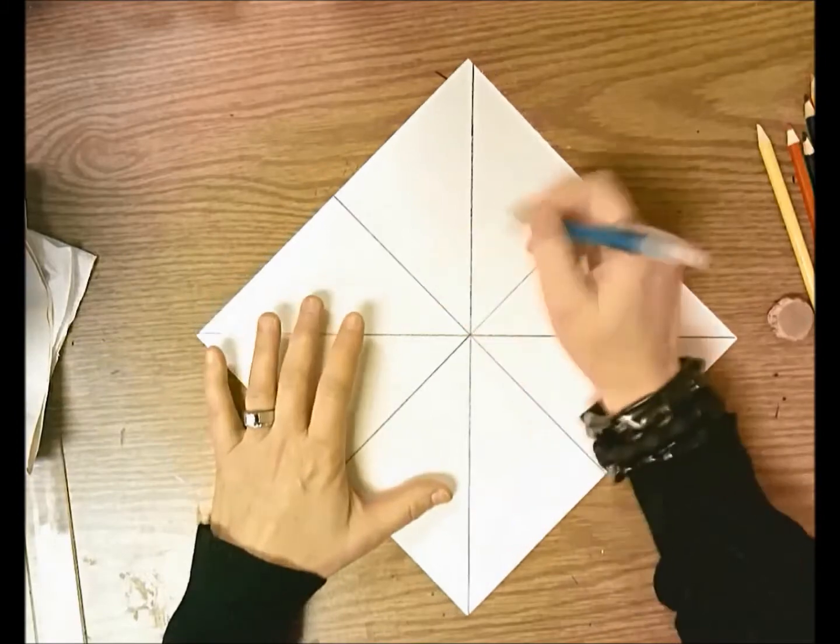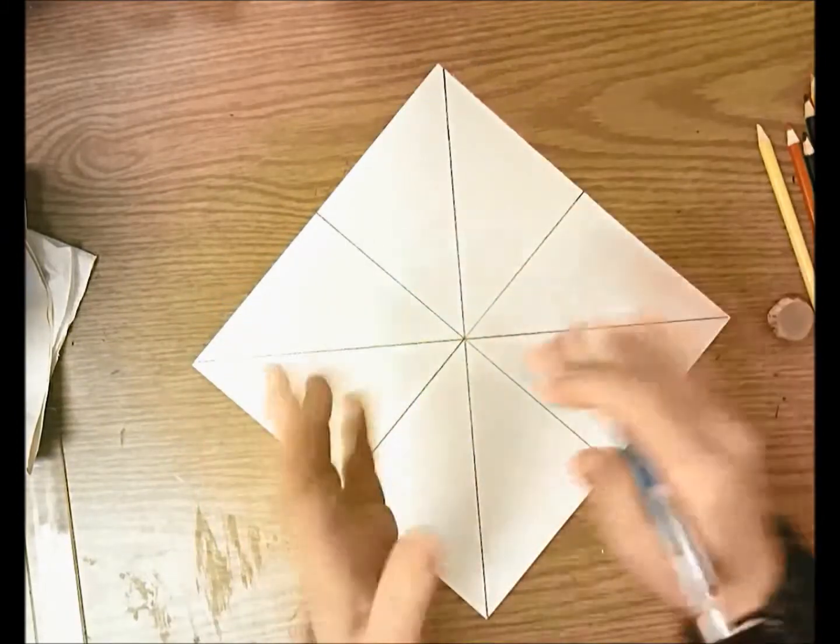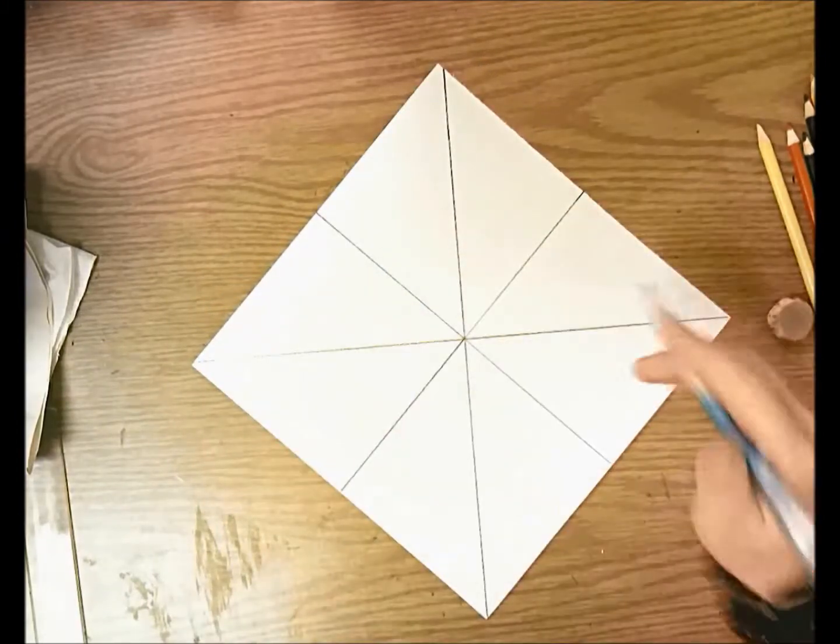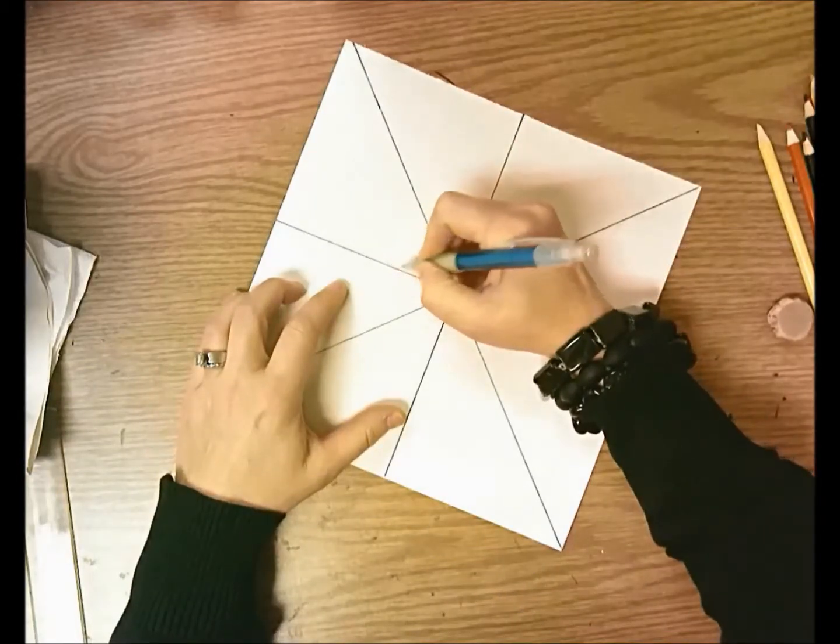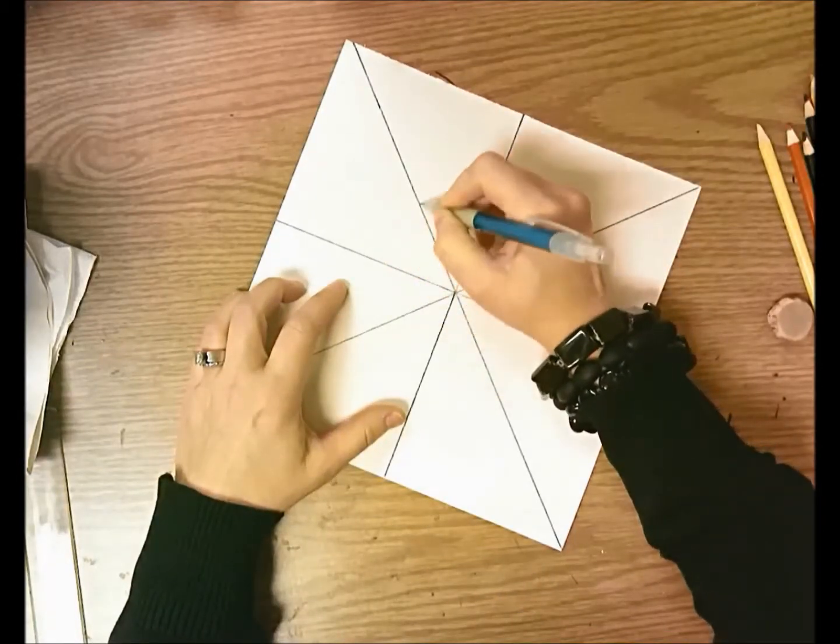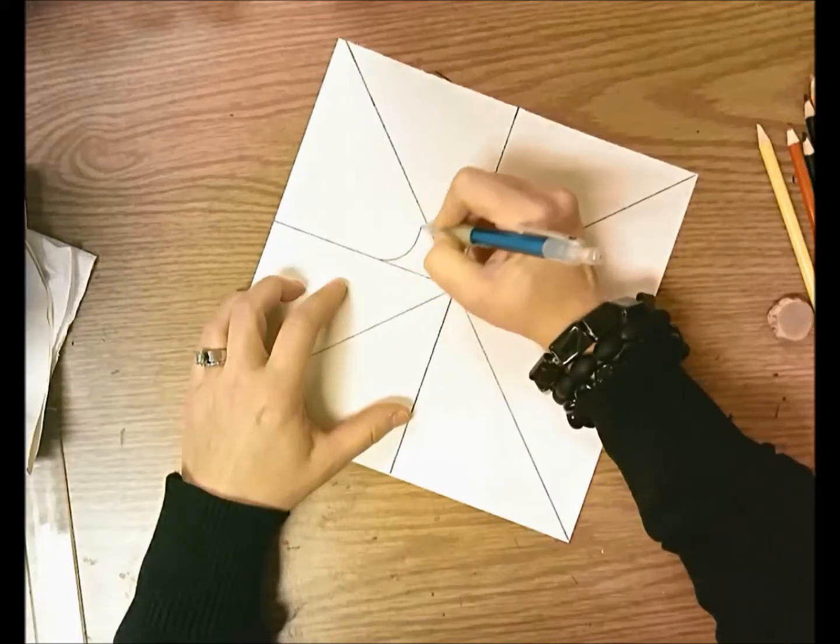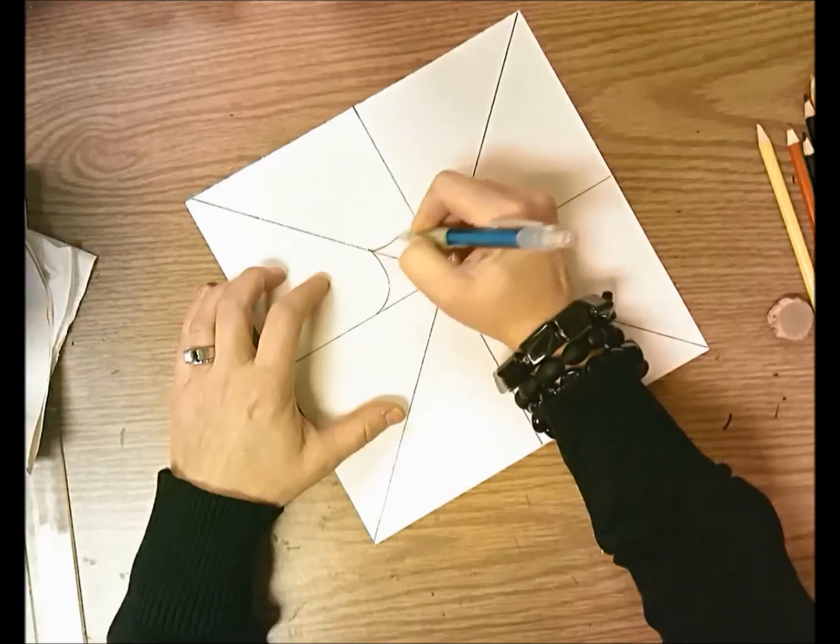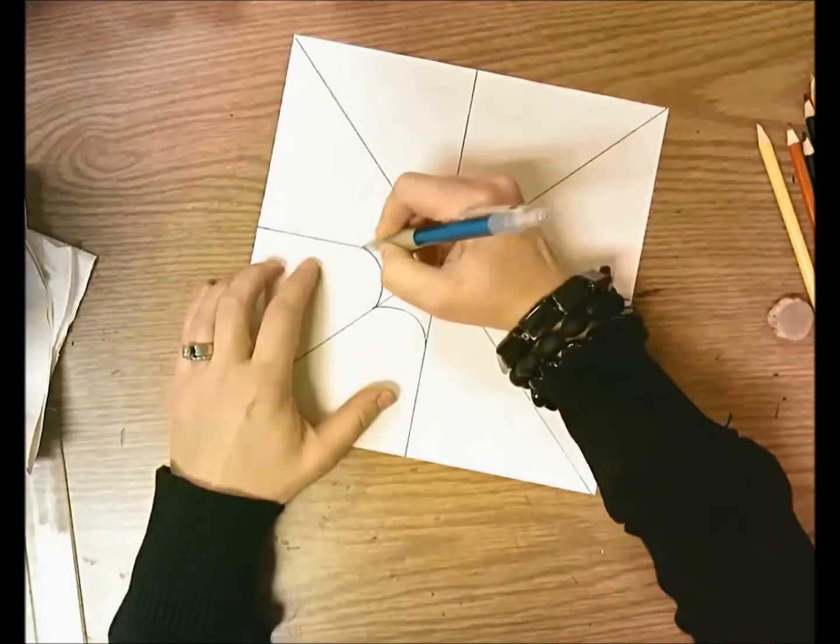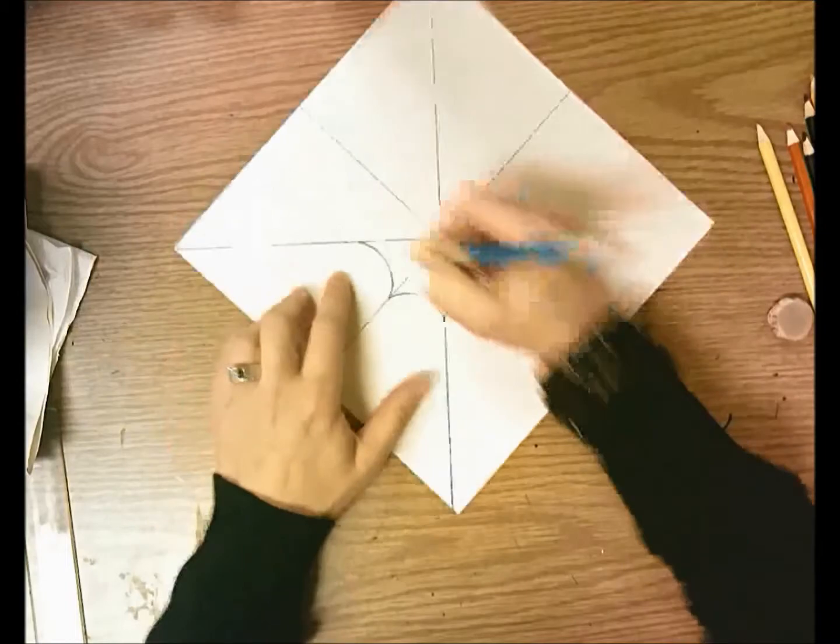So now you're going to draw smile lines, curved lines that curve like a smile, down and then back up from each of the straight lines. And you can draw the smile real deep or you can draw it kind of shallow, it's completely up to you. And then you'll go from this starting at the end of the smile line, over to the next straight line, all the way around.